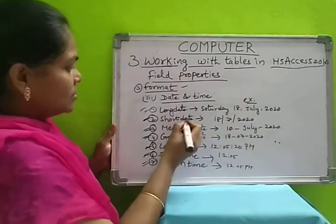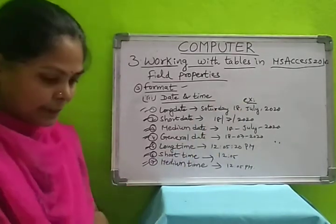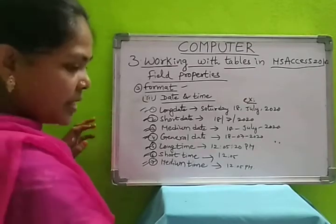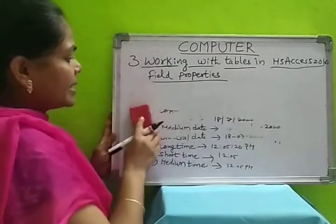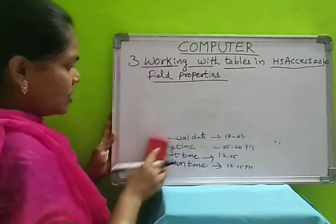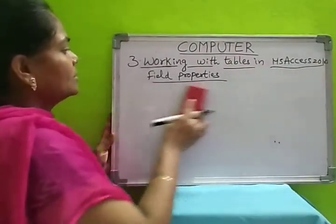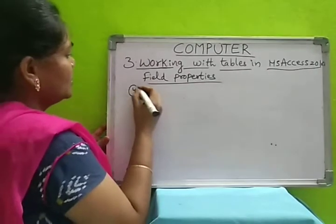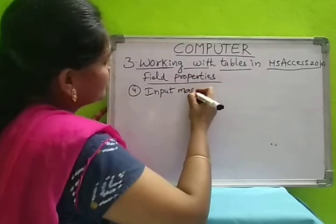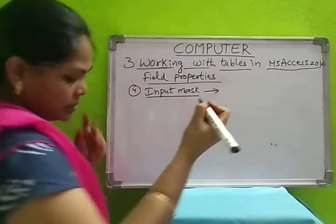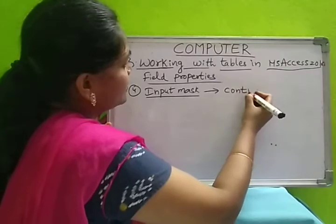Another field property is input mask. In format we have number and currency, date and time, and logical — three types. For those we can select a different format. Input mask controls the entry of data. For example, for date, we have to enter with slashes or hyphens. It checks whether the entry of data is correct or not — if you enter mistakenly, it will give an error message. It controls the entry of data.